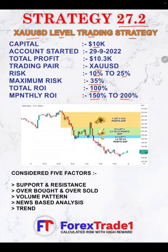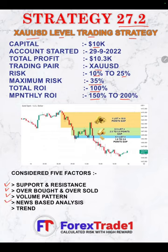Basically we are considering five factors for this strategy. The first one is support and resistance. The second one is overbought and oversold conditions — from such criteria we determine the overbought and oversold condition. The third one is a volume pattern, where we gather analysis for the volume generated for a particular time to determine how beneficial it can be. Another factor is news-based analysis: as per the calendar signals, we analyze whether it is a perfect entry for a buy or sell, and similarly from the calendar signals we follow the trend to determine whether it is the buy side or the sell side.